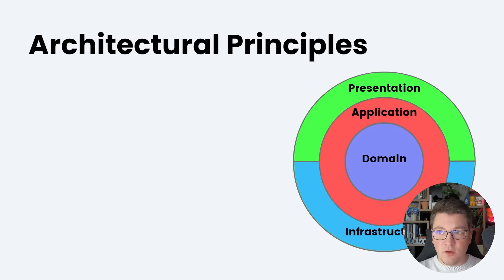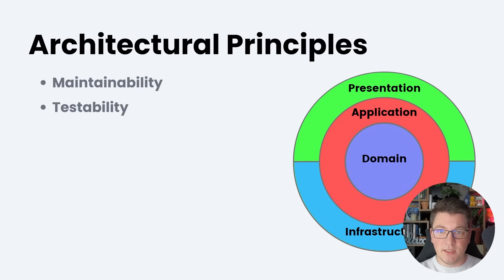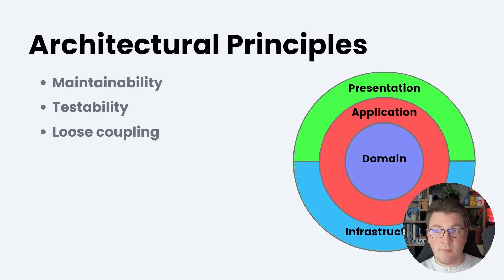When it comes to software architecture, we want to talk about the architectural principles that the software architecture we decided to use will give us. These principles could be maintainability, testability, and loose coupling, and clean architecture delivers all three of these qualities when implemented correctly.